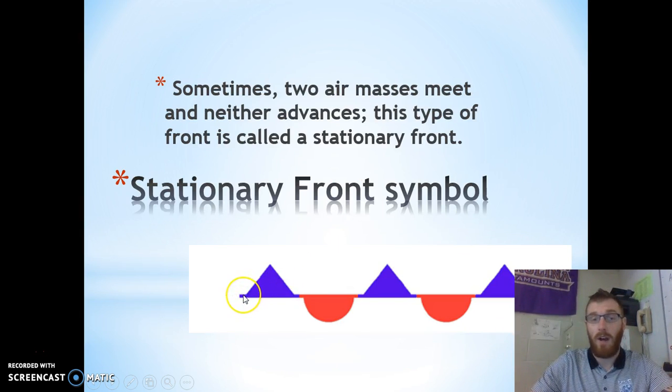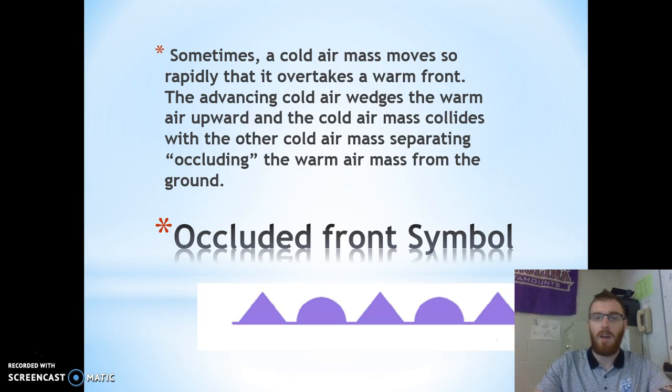Stationary front is just when a cold and a warm hit and they stay, and so that's going to be characterized by alternating blue and red. And then the occluded is where the cold overtakes the warm front, and that's going to be characterized by red and blue mixing to form purple.